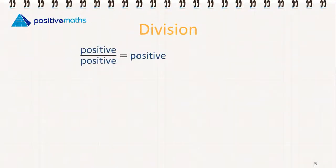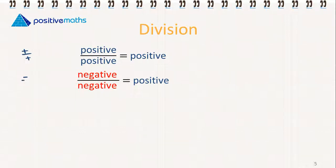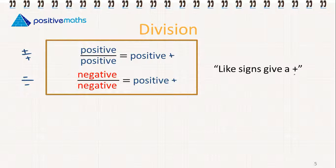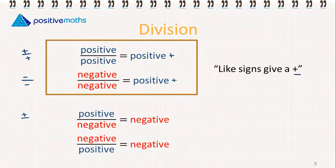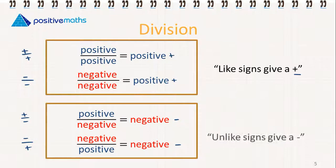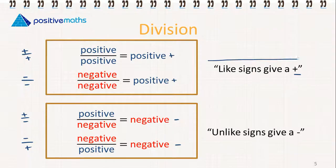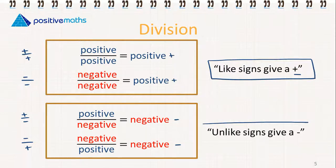The same rules apply for division. If we're dividing signs that are the same — a plus divided by a plus, or a minus divided by a minus — we end up with a plus. Like signs give us a plus. If we're dividing different signs — a plus divided by a minus, or a minus divided by a plus — we end up with a minus. Unlike signs give us a minus. These two rules apply for both multiplication and division.